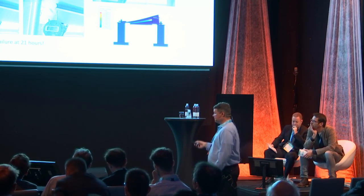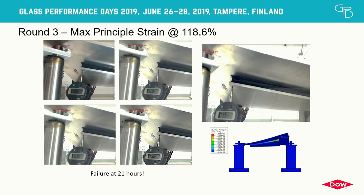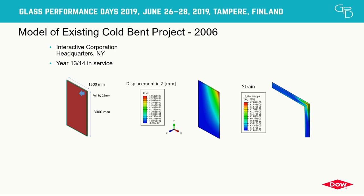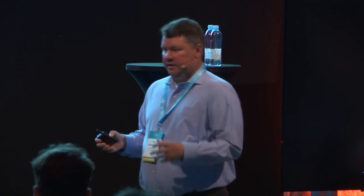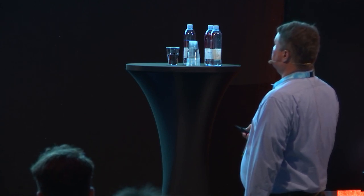We made an assumption using the IAC building, which has been in service for 13 or 14 years. We know the displacement, we have the CAD models, we can run the FE analysis to determine the peak principal strain, and then assume it hasn't failed — which is consistent with reality, as there's no indication the sealant is failing. This gives us another data point on our graph to try to predict at what point better design of cold bent glazing, incorporating max principal strain, ensures or increases durability. For this project, the max principal strain is around 20% in the model.